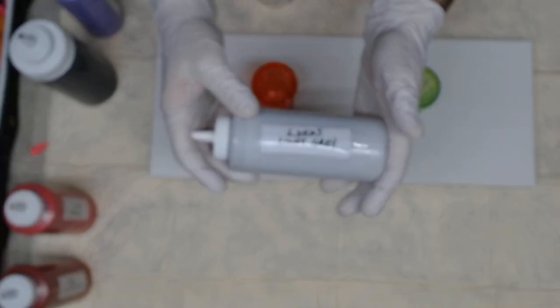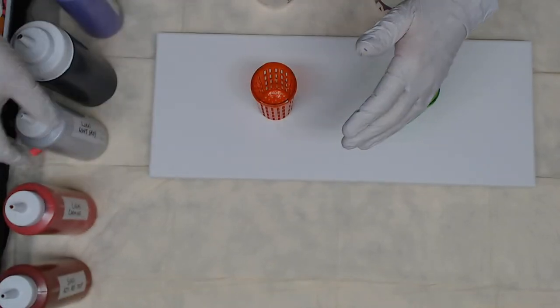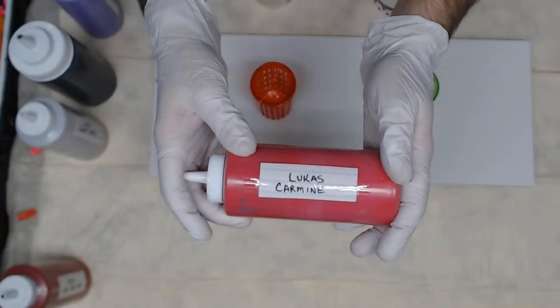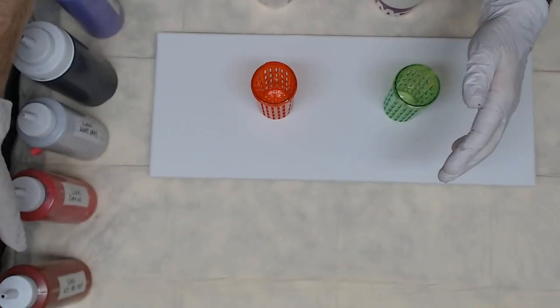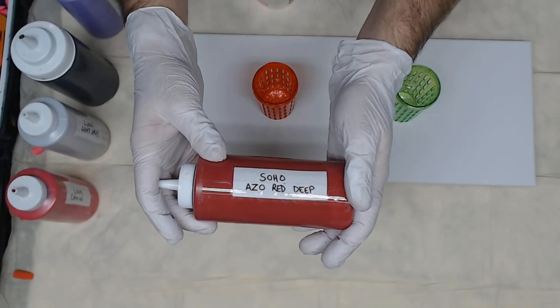Lucas light gray, Lucas carmine, and Soho's azo red deep.